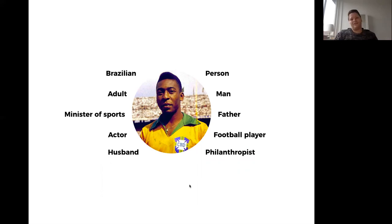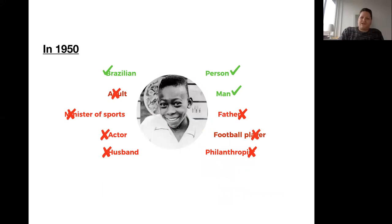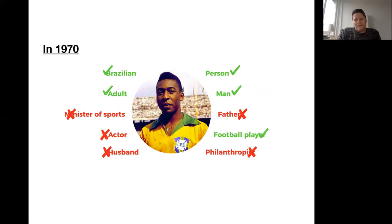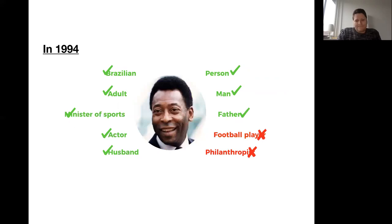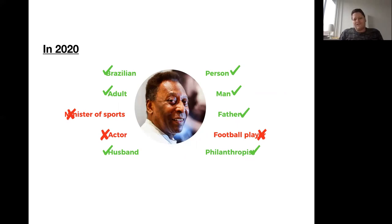In 1950, Pelé was Brazilian, a person, and a man. In 1970 he became an adult and a football player. In 1994 he was also an actor, a husband, and a father. In 2020 he was also the Minister of Sports in Brazil. In 2020 he is no longer a football player, nor a minister, nor an actor. All these notions are general terms in the domain — unary predicates from a logical point of view — but they describe very different ontological properties.